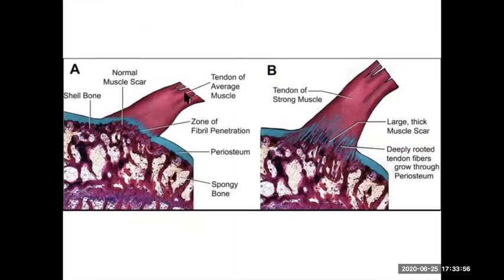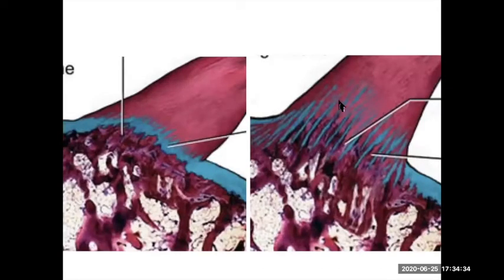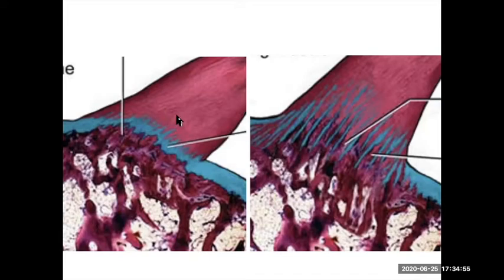Here's a picture of the tendon that inserts into the periosteum — this is dense regular connective tissue. The collagen fibers are inserting into the dense irregular tissue of the periosteum, but there are also fibers penetrating the bone. Let's pretend this is your deltoid tuberosity. If you're working out your delts a lot, you're putting a lot of stress on that area, and that tendon is going to create a pulling force. Your bone is going to grow in response, so your deltoid tuberosity will have a much more pronounced ridge.